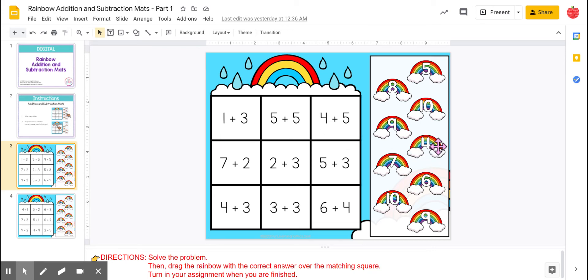That answer is four. I come over here and get my rainbow with number four on it, and I just drag it right on top of the one plus three.